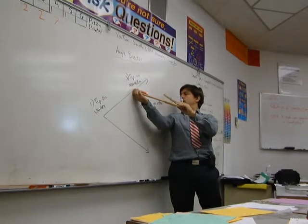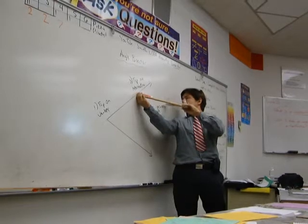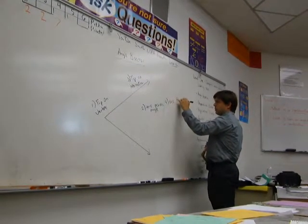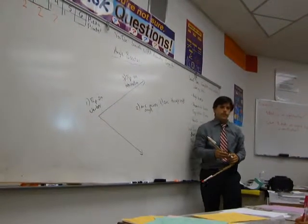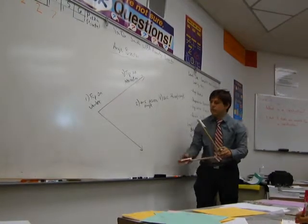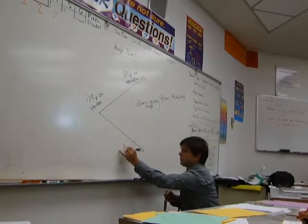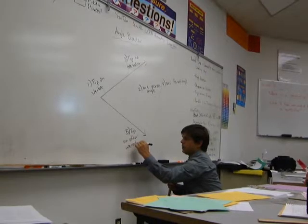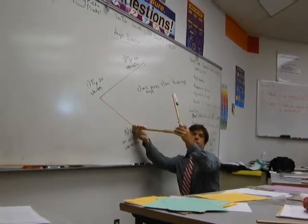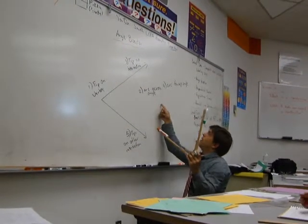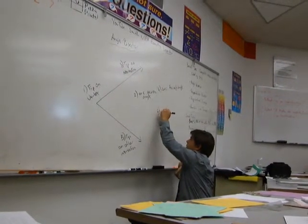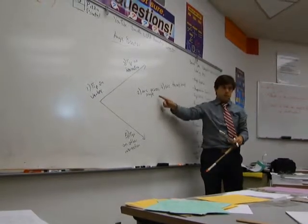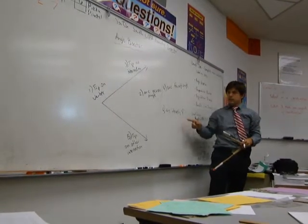Step four: arc across the angle. Step five: tip on the other intersection. Step six: arc intersecting arc four — so two arcs cross right there.